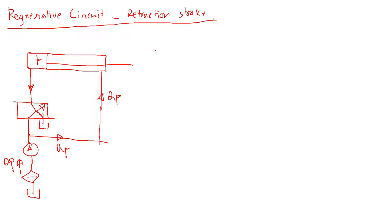For the retraction stroke of the regenerative circuit, we can calculate the pump flow. Looking at how it's connected through the directional control valves, the flow from the blank end return goes to the reservoir, and then the pump flow directly goes to the rod end.